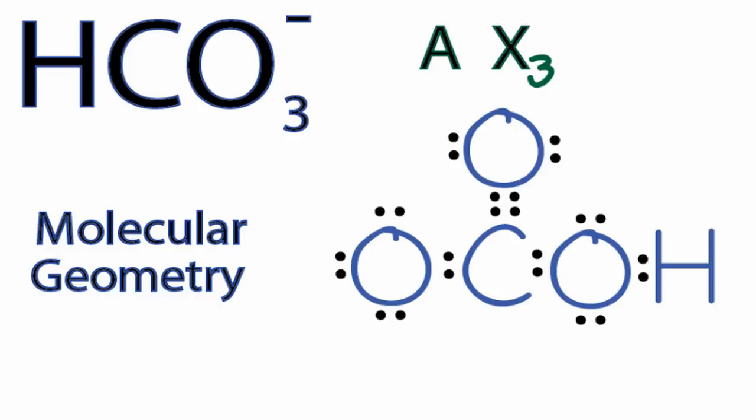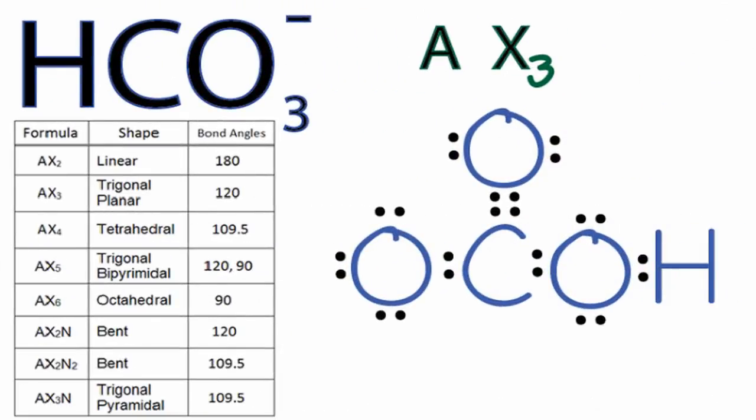So you could have memorized that AX3 is a trigonal planar molecular geometry. Or, if you had a table available, you could look it up. As we go down our table, we see AX2, and right there is AX3, a trigonal planar molecular geometry, and the bond angles should be about 120 degrees.